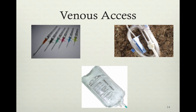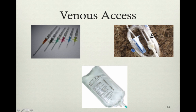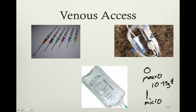There are two types of administration sets: a macro drip and a micro drip. If the barrel at the top of the administration set is large, it's a macro; if it is needle-like, it's a micro. This refers to the drops per milliliter — most macros are 10 to 15 drops per milliliter, and micros are 60 drops per milliliter. Please look at the skill set video on this as well.